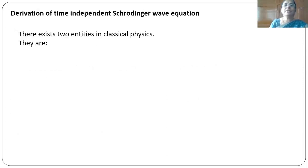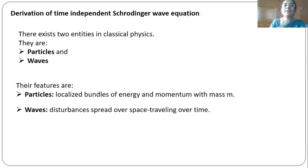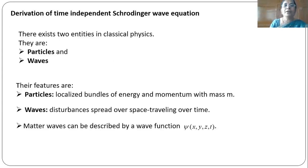In the entire universe the existing things appear in two entities — one is particles and the other is waves. Particles are localized bundles of energy and momentum with mass m. Waves are disturbances that spread in space and travel over time. Matter waves can be described with the help of a wave function psi, which depends on the space and time coordinates t.